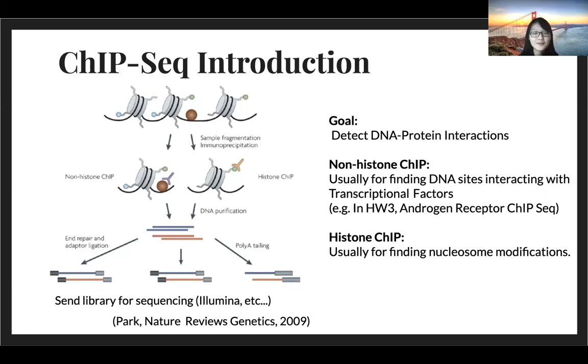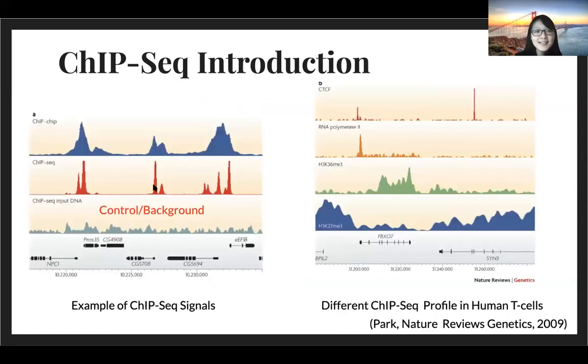There are non-histone ChIP and histone ChIP. Non-histone ChIP is more like targeting transcriptional factor binding, while histone ChIP is more like trying to find histone modifications. Here is an example of how ChIP-Seq signal would look like. In the left figure, the ChIP is actually immunoprecipitation followed by microarray, while the middle figure is immunoprecipitation followed by sequencing, which is our dataset for this homework.